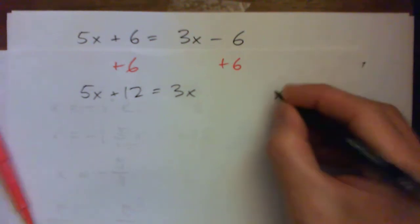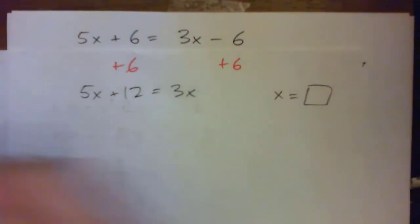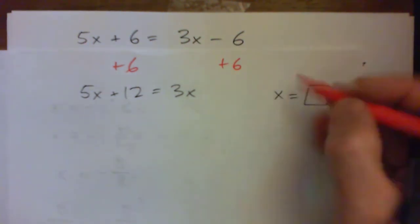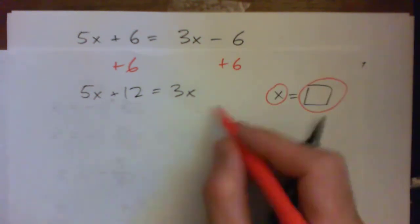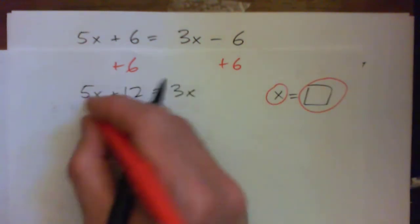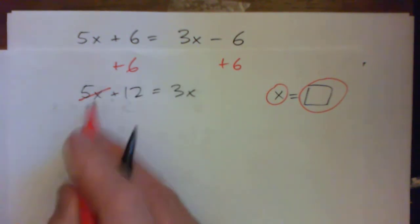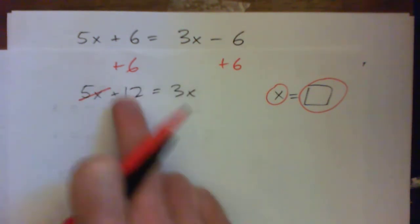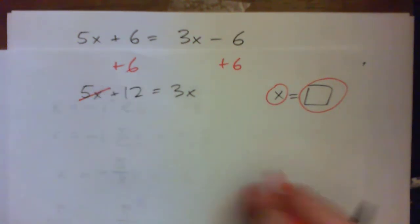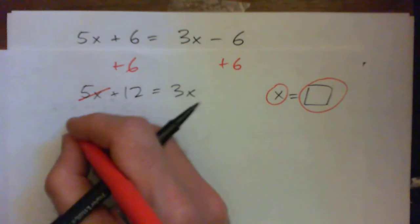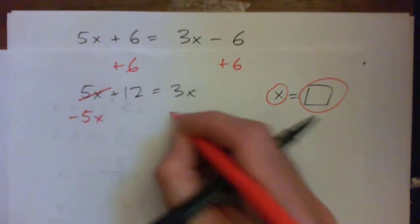But remember, I need to get x is equal to some number. And what I really need is x is on one side and numbers on the other side. And so at this point, I need to actually get rid of that. This is the guy that's complicating my life because I already have a number here. That's great. I just need all the x's on one side and all the numbers on the other. So to get rid of this guy, subtract 5x from both sides. See that?